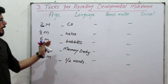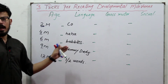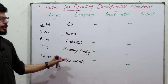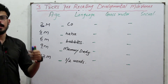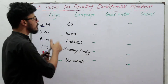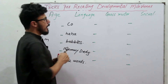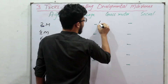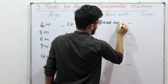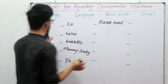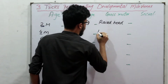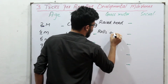To recap the language milestones: at two months there is coo, four months laughing, six months babbling, nine months mommy and daddy, and twelve months one or two words. In gross motor activity, a two-month-old baby can raise the head, and a four-month-old baby can raise the head and roll over.